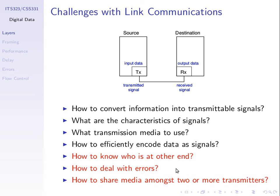Another problem with our link: transmission impairments. Attenuation and noise may result in me sending a sequence of bits — one, one, zero, zero — but because of noise the receiver gets one, one, one, zero. We send four bits and receive four bits, but the receiver gets one of those bits wrong. We call that a bit error. We can't just accept that in most cases — we need to deal with it.